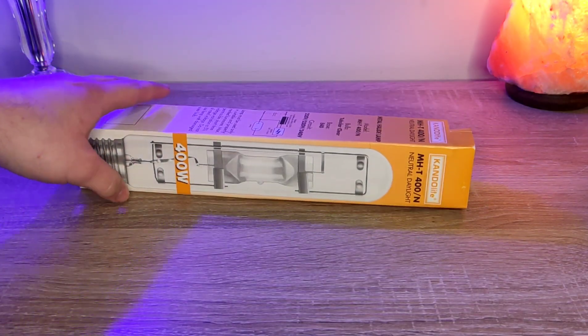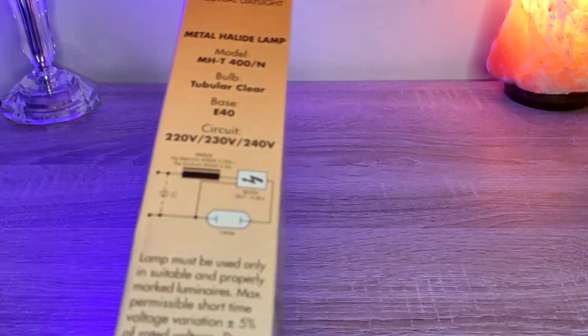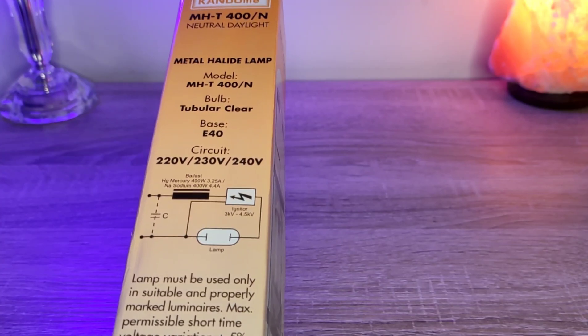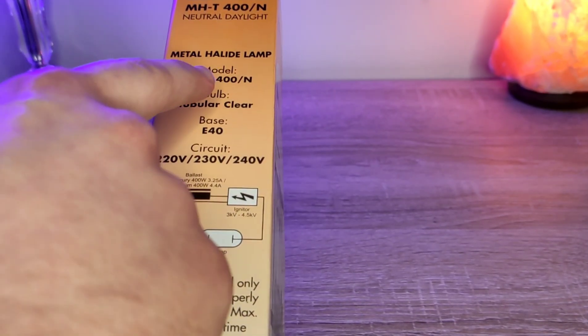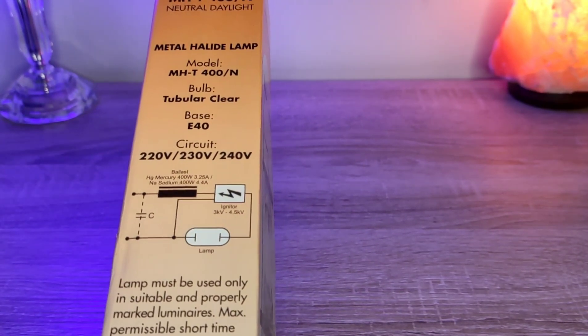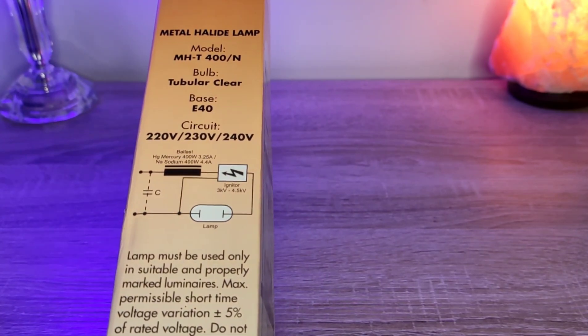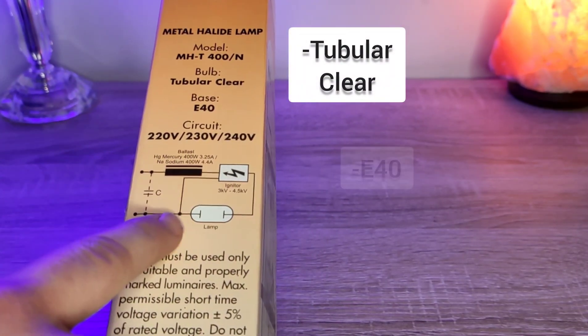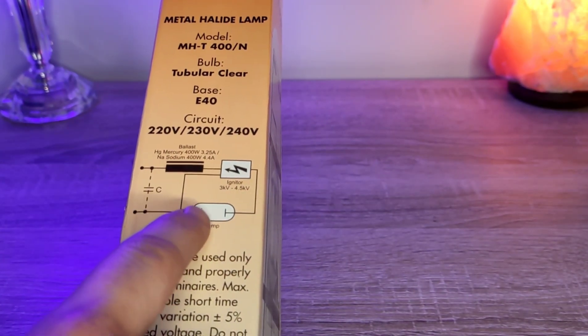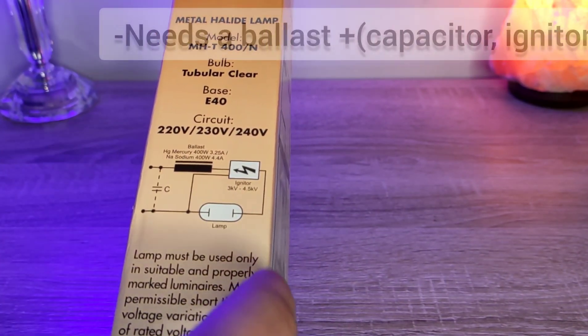So let's actually see, first, the package. On the package we can see some information. Metal halide lamp, the model and by the way, I'm not sure but this T over here stands for tubular in this particular model. Of course bulb tubular clear, base E40 and yet a little circuit schematic. Of course this lamp needs an actual ballast and of course the igniter and what not.